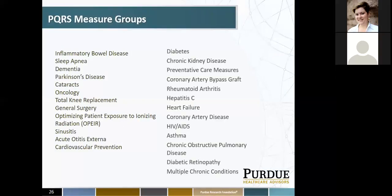PQRS measure groups — there are 25 available different measure groups. When you choose a measure group, such as a diabetes measures group, there are usually between five to seven measures within it. You report on 20 applicable patients, 11 of which must be Medicare Part B — the other patients could be commercial insurance. Not all practices are able to report a measures group, so you need to review the measure specification sheets to see if your providers would meet every measure within the measures group.